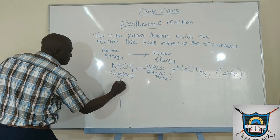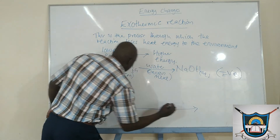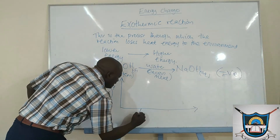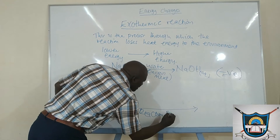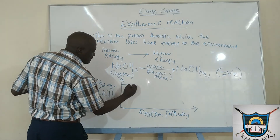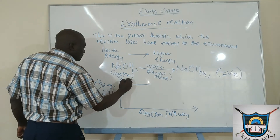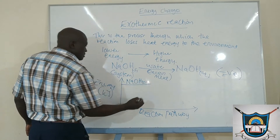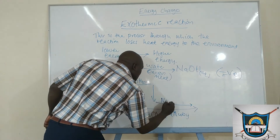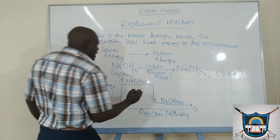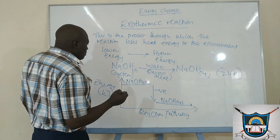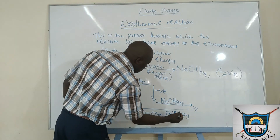So on the energy level diagram, we have energy in kilojoules, and then we have the reaction pathway. So in this case, there is a difference — we start from a higher energy and then move to a lower energy. The sign now will be negative because you are moving from a higher energy to a lower energy.